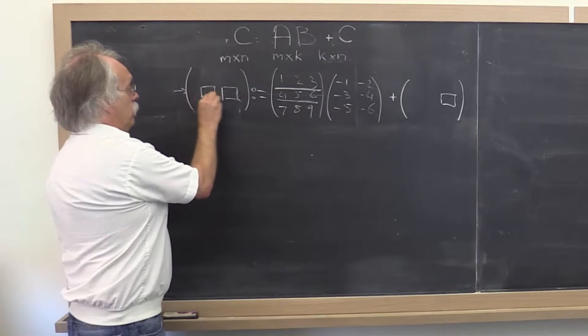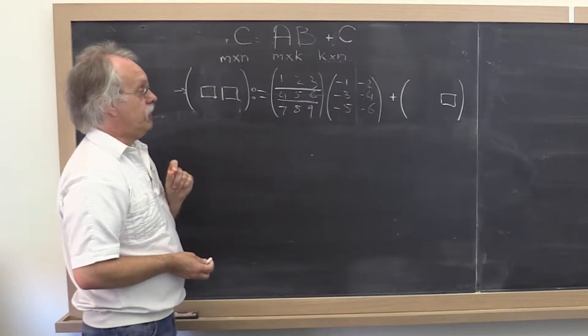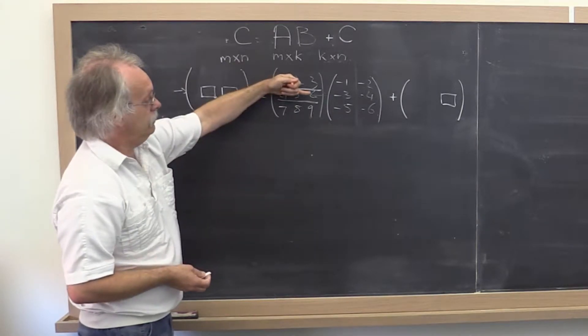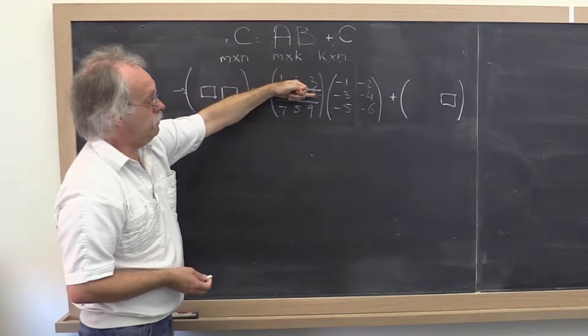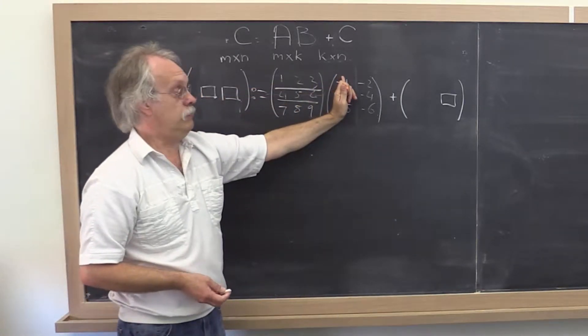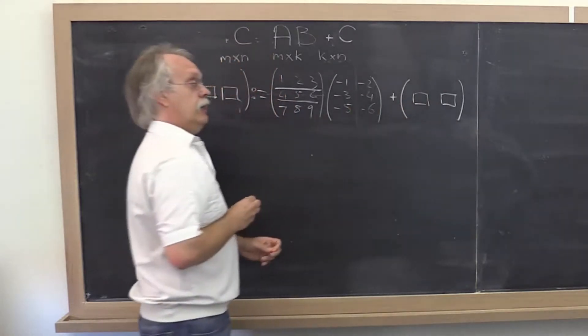If you then were to also compute that element, that other element in the same row, then what would happen there? It would be the dot product, the inner product of that same row with the first column added to that element of C.